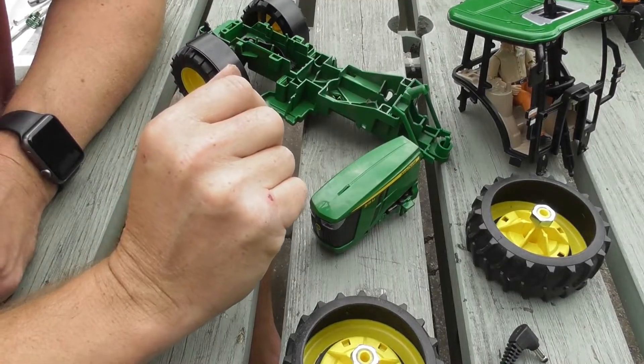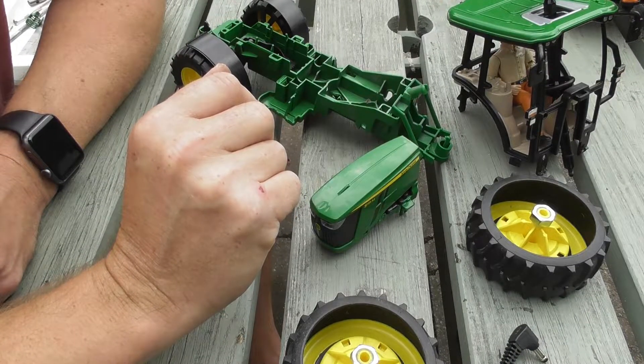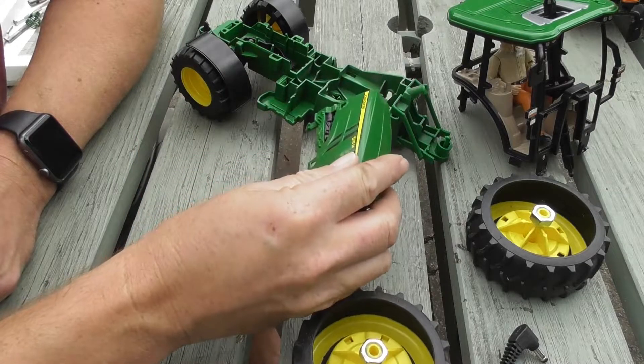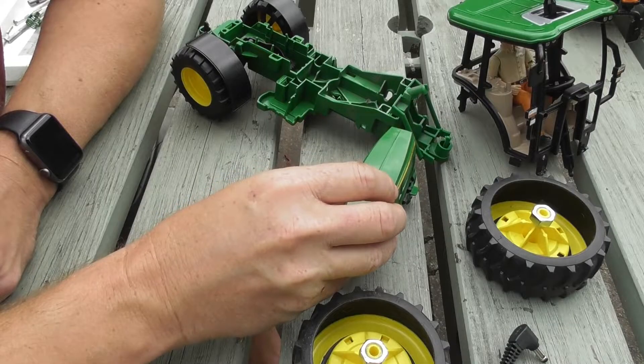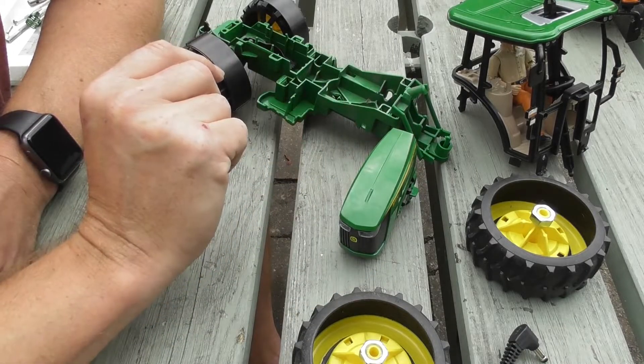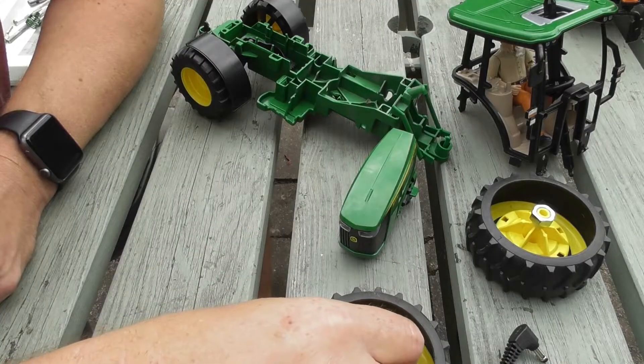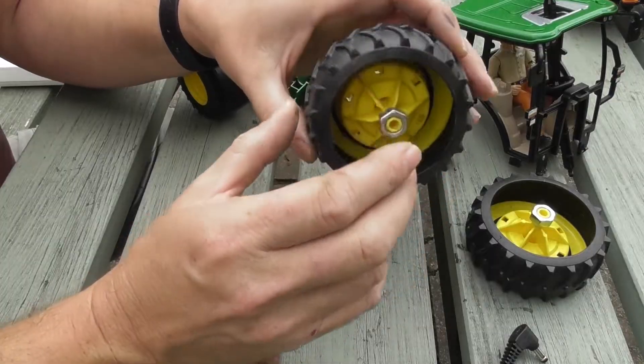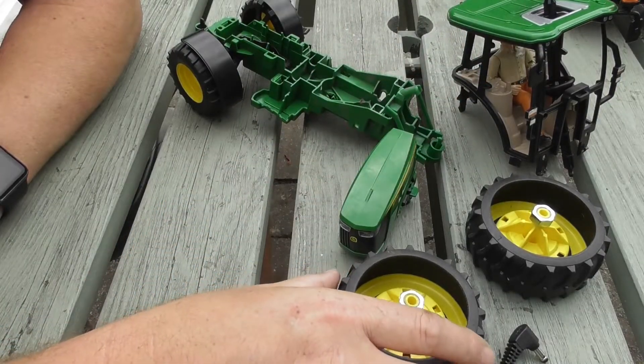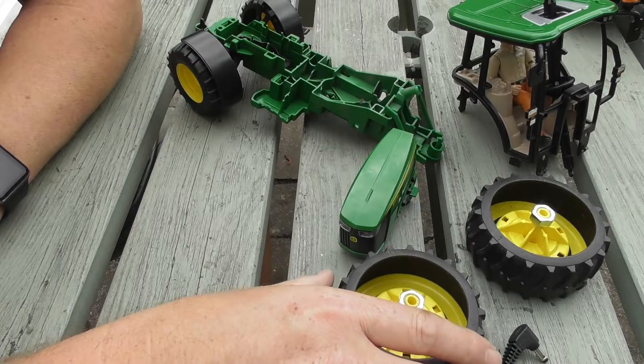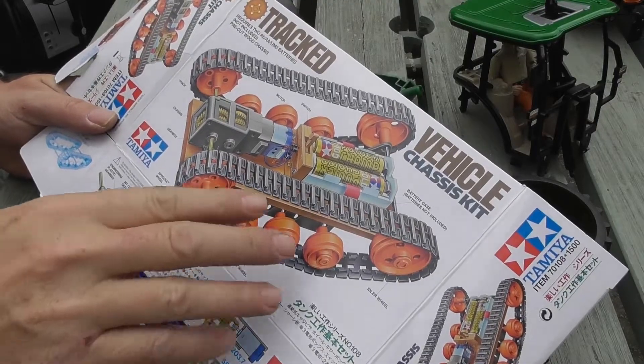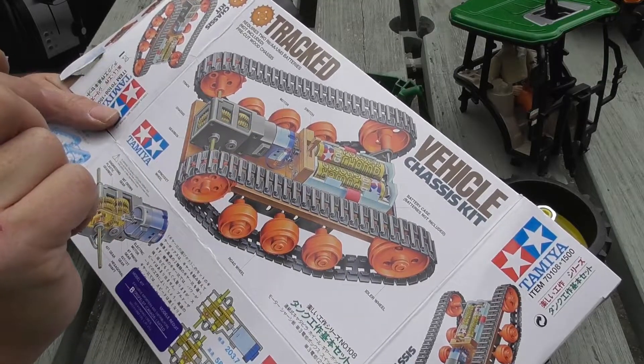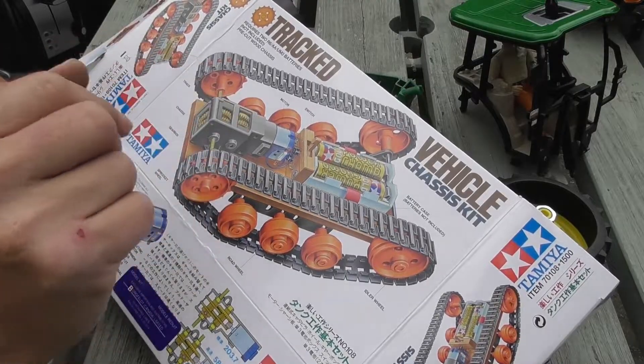Welcome to the second part of this video looking at radio controlling the Bruder 5115M John Deere tractor. In this part, we're going to be sorting out how to attach these wheels to an axle and installing the small Tamiya three-speed gearbox. The gearbox comes in the vehicle chassis kit and you can see it here. You can make it in a number of configurations.